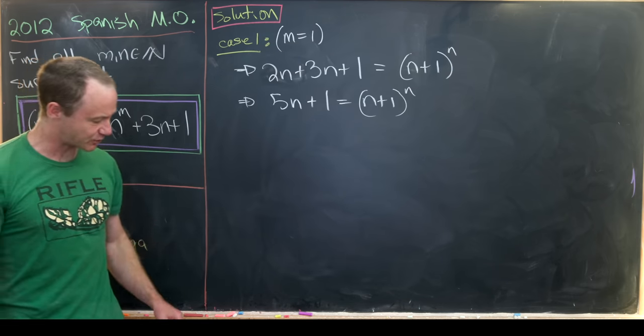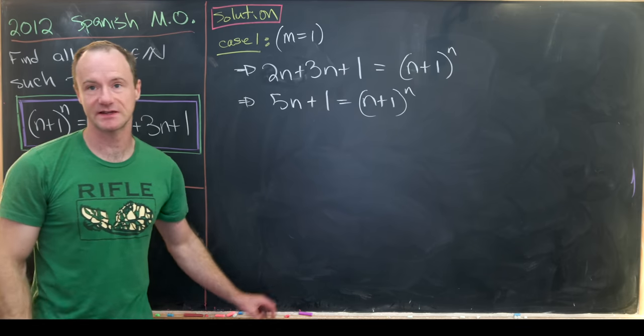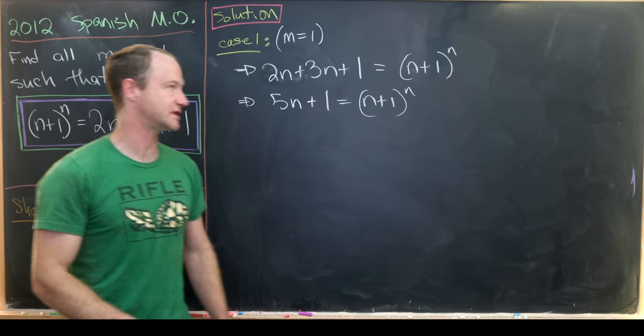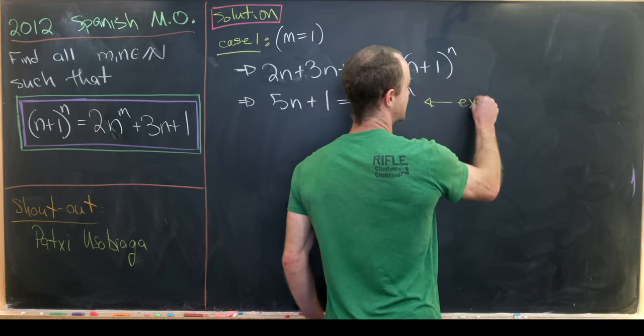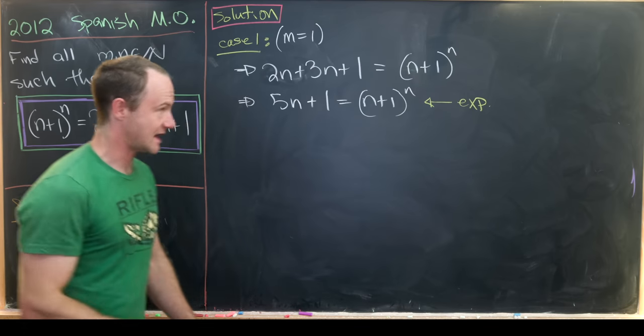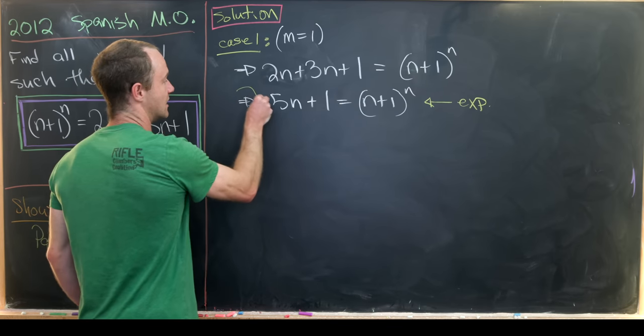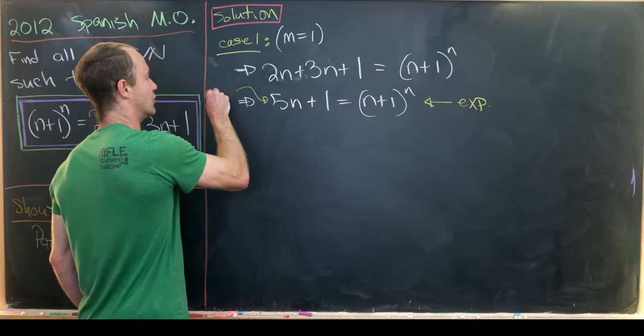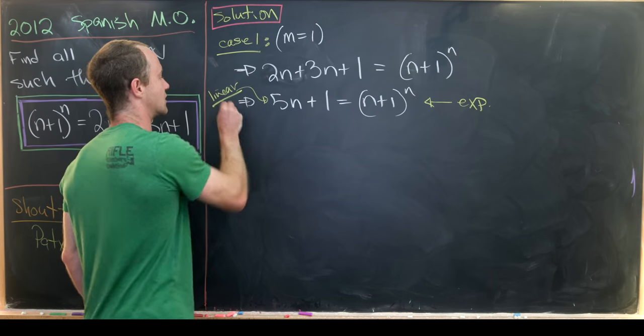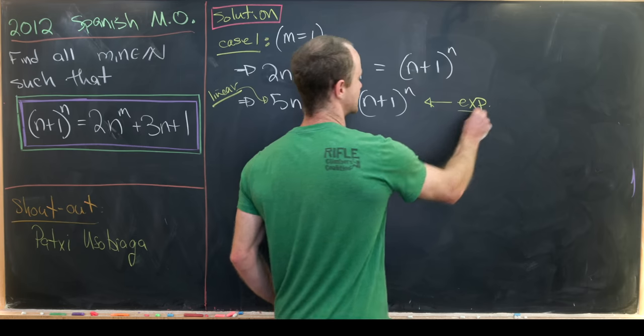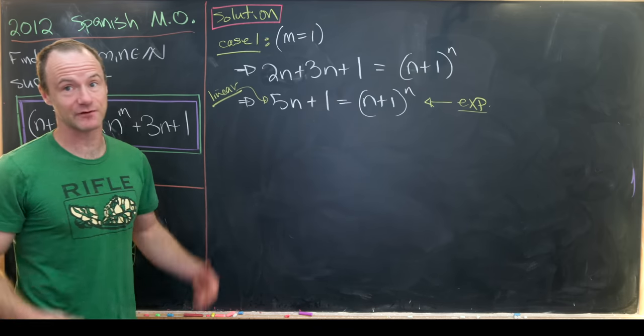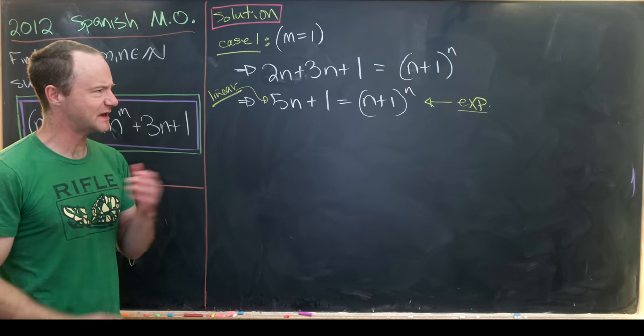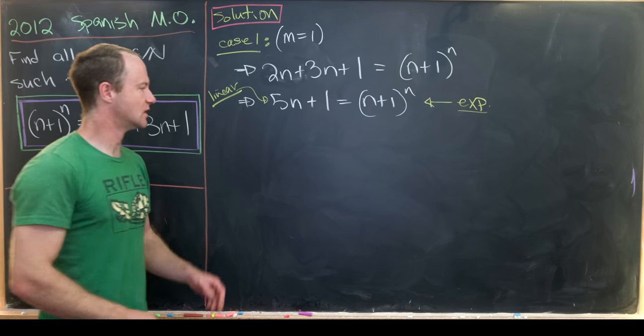But you can see that there's probably no solutions to this. And I say there's probably no solutions to this because we have an exponential on the right-hand side, whereas on the left-hand side we have a polynomial. In fact, we have a linear polynomial, and it's well known that exponentials will grow larger than linear polynomials, like after a certain point. But now how could we show this?